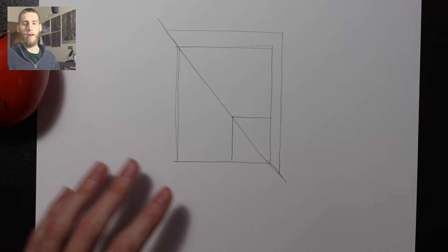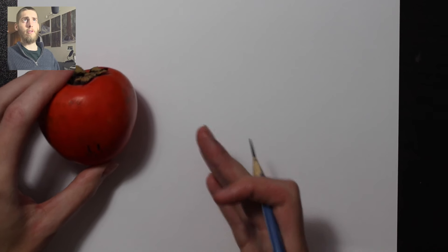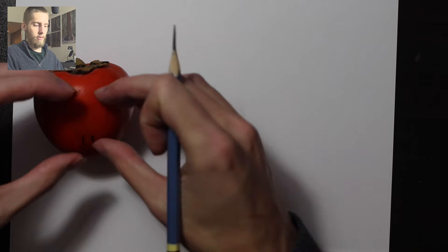So let's get into drawing an actual object, like how would I go about drawing this persimmon? What's the method? How do I keep it in proportion? Let's say I was to draw this persimmon larger than life, not the same size, not smaller but larger.